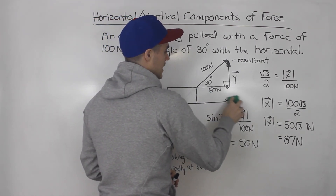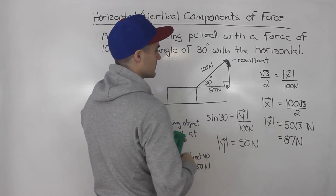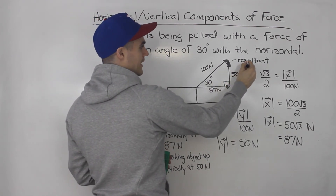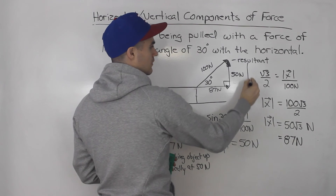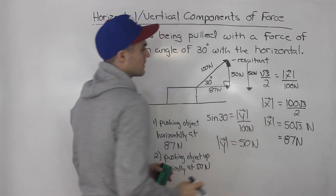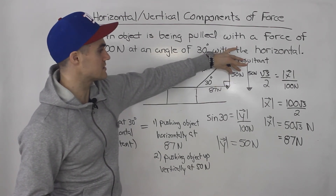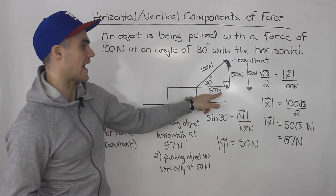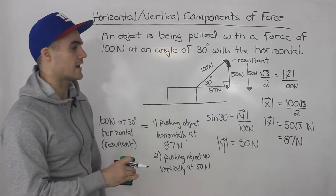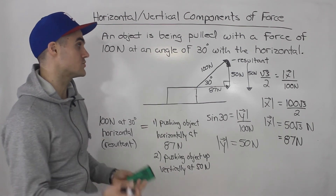What about the opposite case? What if we neutralize the y vector — the vertical vector of 50 newtons? In addition to the resultant, if we add another vector pointing downward, exactly opposite to the vertical vector and with the same magnitude of 50 newtons, then those two forces will be neutralized. So the object is just going to move horizontally at 87 newtons, because those two vertical forces are gone.